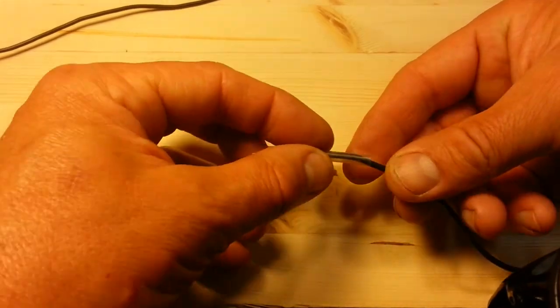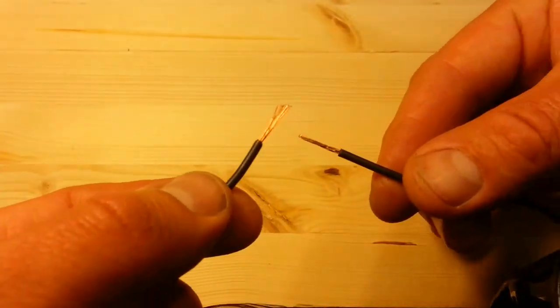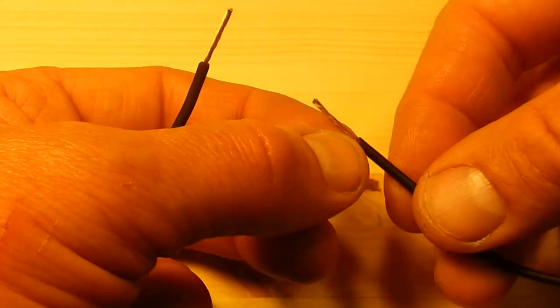If you're using heat shrink tubing, slide it onto one of the wires now and position it well away from where you'll be soldering, as heat will travel up the wire and it will make it shrink on you.